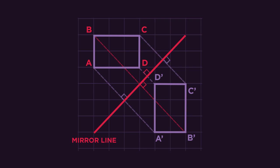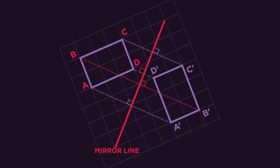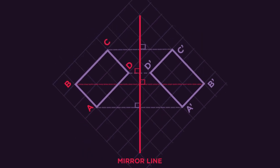Here's a little tip, if it's difficult for you to envisage the shape being perpendicular to the mirror line, you can rotate the page so that the mirror line appears vertical.